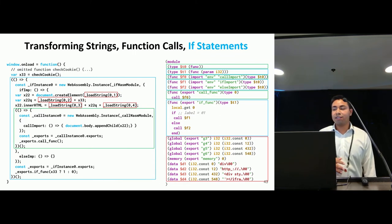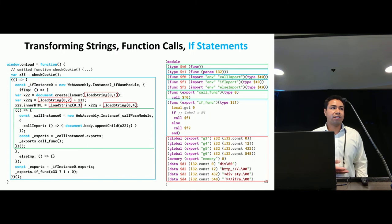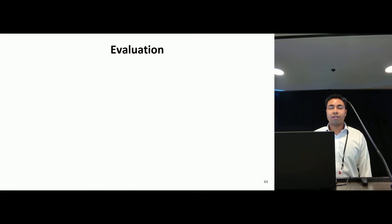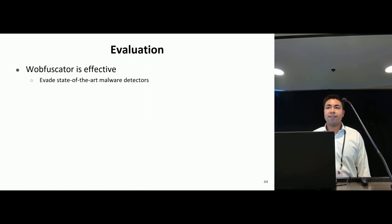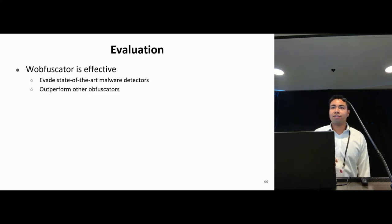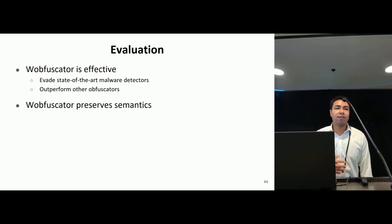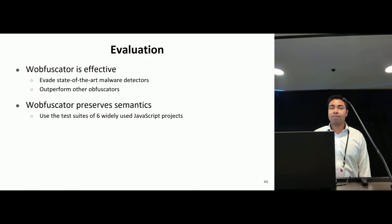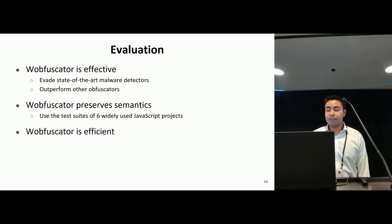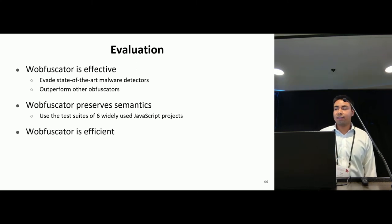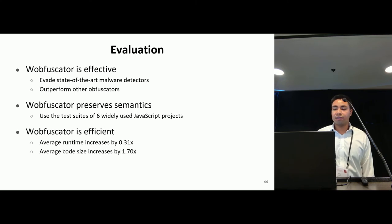After applying all of our transformations, we have the final output with the rewritten JavaScript file and the new WebAssembly modules. We evaluate our tool along three dimensions. First, we show that WafiSkater is effective at evading state-of-the-art learning-based static malware detectors and can outperform existing obfuscators. Second, we validate that WafiSkater preserves code semantics using the comprehensive test suites of six widely used JavaScript projects. Finally, we show that WafiSkater is efficient in terms of both runtime overhead and code size increase.